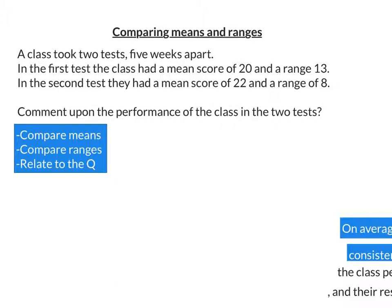So this question is about a class that took two tests, and now we've got the means and the ranges for both of them. So in terms of the means, the mean has gone up over time, and the ranges, they've gone down.